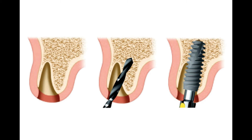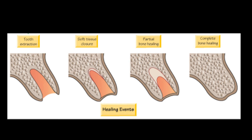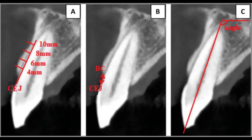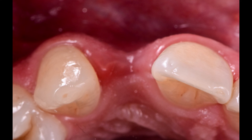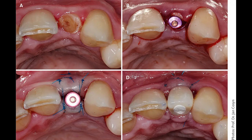So why do we need immediate implant placement? Can't we just wait for the healing of the socket and place the implant after proper healing of the bone? No — because in the anterior aesthetic zone, after extraction of the tooth, the buccal plate is very thin. If we leave it as is, the buccal bone will collapse and there will be significant bone loss. So ideally in the anterior region, after extraction of the tooth, we have to do immediate implant placement.